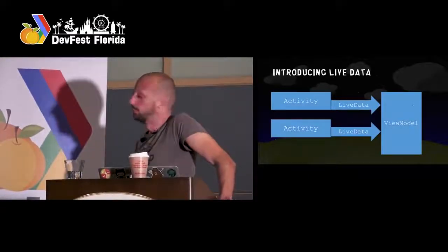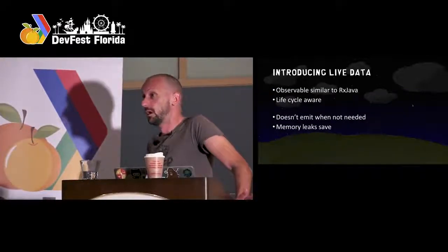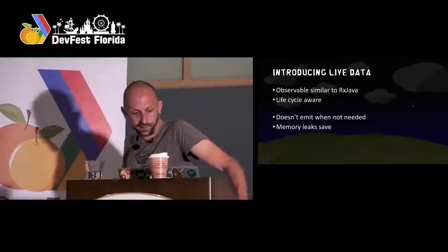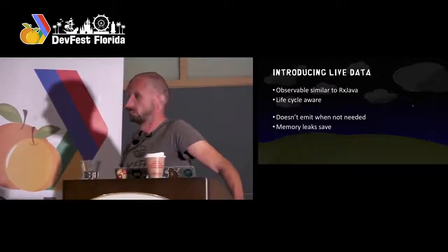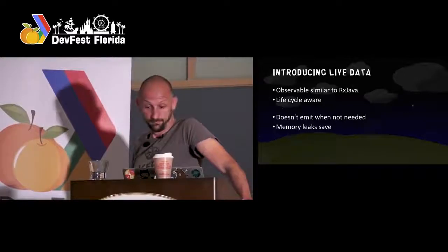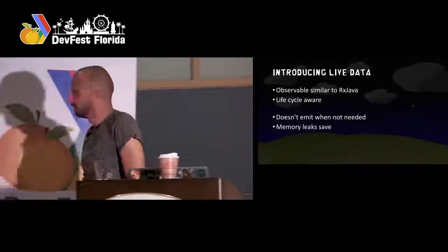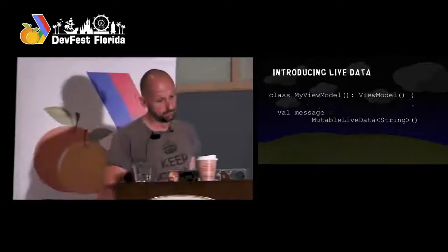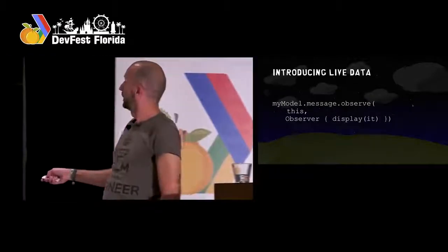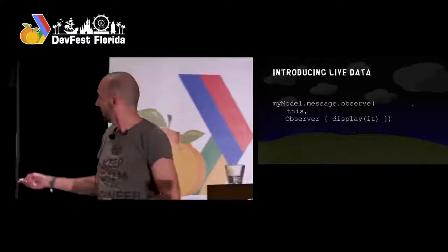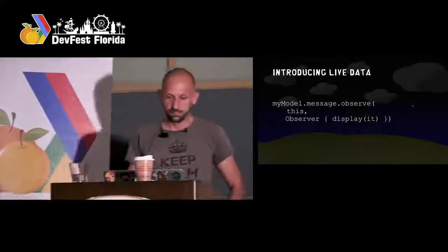What is LiveData? It is observable, similar to RxJava but actually much simpler. One of the reasons Google said to look into LiveData is that RxJava is hard to understand — after half a year you still have issues with RxJava. LiveData is lifecycle aware, and it will just not emit if no one is listening, which is a nice way to be memory-leak safe. How would you use it in your ViewModel? You would expose a variable — for example a message string — wrapped in MutableLiveData. Then in your activity: myModel.message.observe — you pass this lifecycle owner and create an observer with one method to handle the update. Simple: expose immutable LiveData and use it.